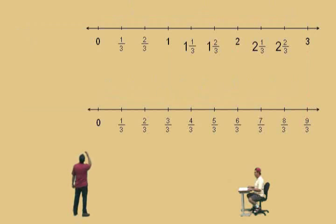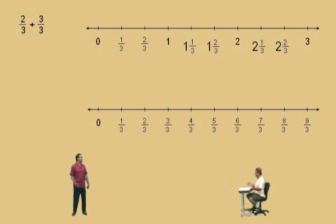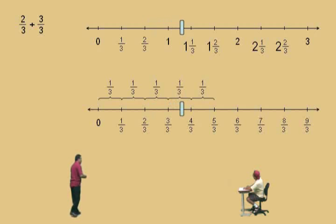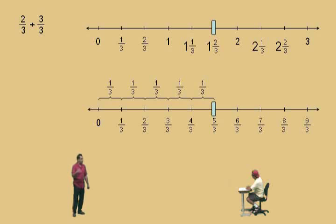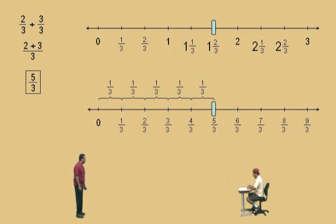Let's do some problems. Here we have two-thirds plus three-thirds. It's like saying what's two plus three? Five. If you have two apples and somebody gives you three more, you have five apples. So two-thirds plus three-thirds is five-thirds. On the number line, two-thirds plus three more-thirds lands on five-thirds. As long as the denominators are the same, just add the numerators: two plus three equals five, so the answer is five-thirds.